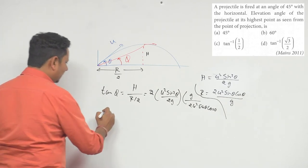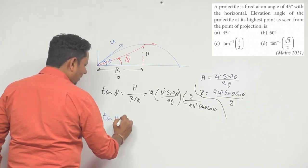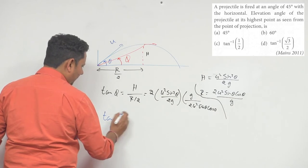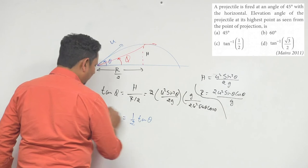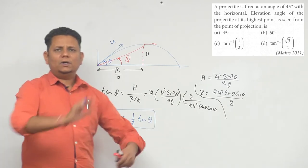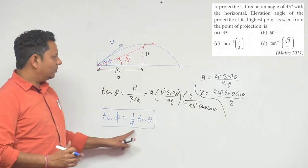So tan phi equals half tan theta. This is a very important relation that you may want to remember. If you can remember it, that's good.